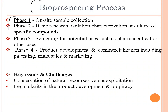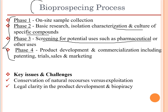There are four phases in the bioprospecting process. The first phase is on-site sample collection. The second is basic research — isolation, categorization, and culture of specialty compounds. The third is screening for potential uses such as pharmaceutical or other applications. The fourth and final phase is product development and commercialization, including patenting, trials, and marketing.